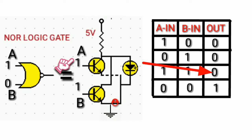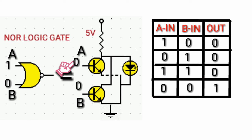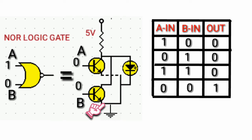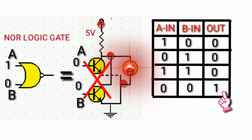Now let's inject both inputs with logic low. When both inputs are injected with logic low, no current flows from the base to the emitter of either transistor. So the transistors are not working. Then the current flows directly from the resistor to the LED, and the output is logic high.